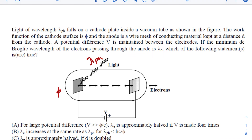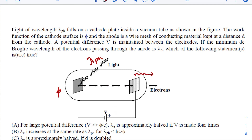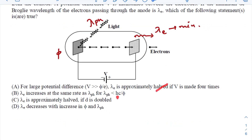If the minimum de Broglie wavelength of the electrons passing through the anode is lambda_e — these electrons get excited and further accelerated to the anode, and while crossing the anode they will each have their own de Broglie wavelength. There will be many electrons with different de Broglie wavelengths; lambda_e is the minimum. That means that electron will have the maximum kinetic energy.